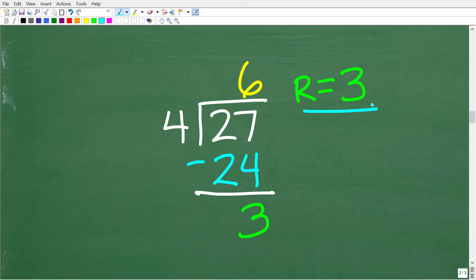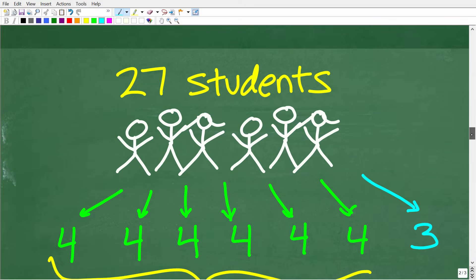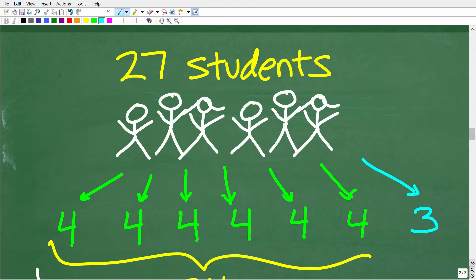So 27 divided by four is six with remainder three. But what does this mean in terms of our problem? We have 27 students and we want teams of four. So we can have six teams of four. But then we have this remainder of three. So the way we interpret this, of course, is the following. Just to kind of be clear about this.